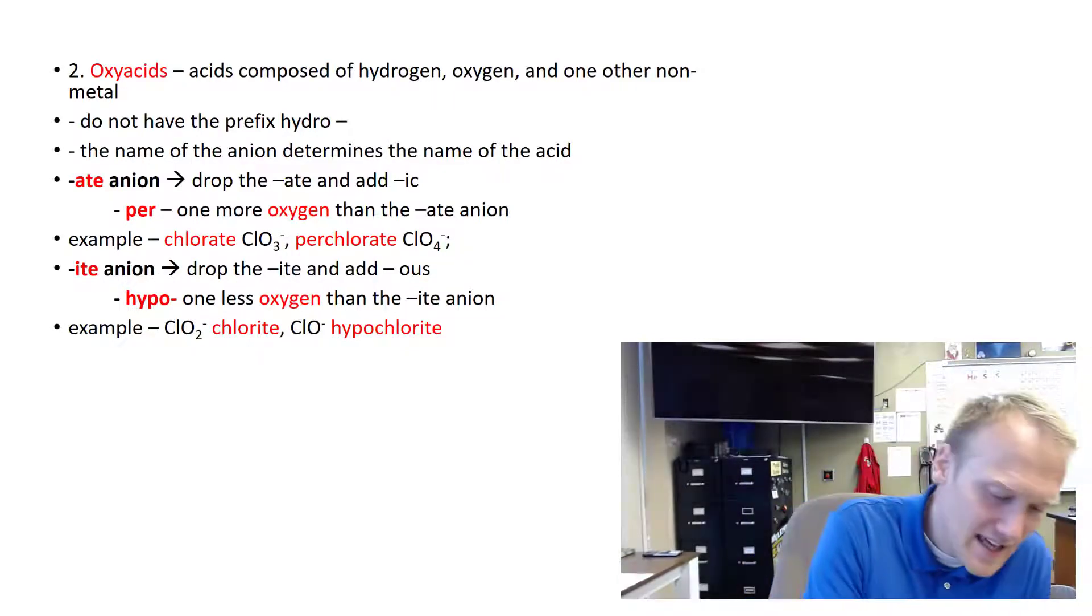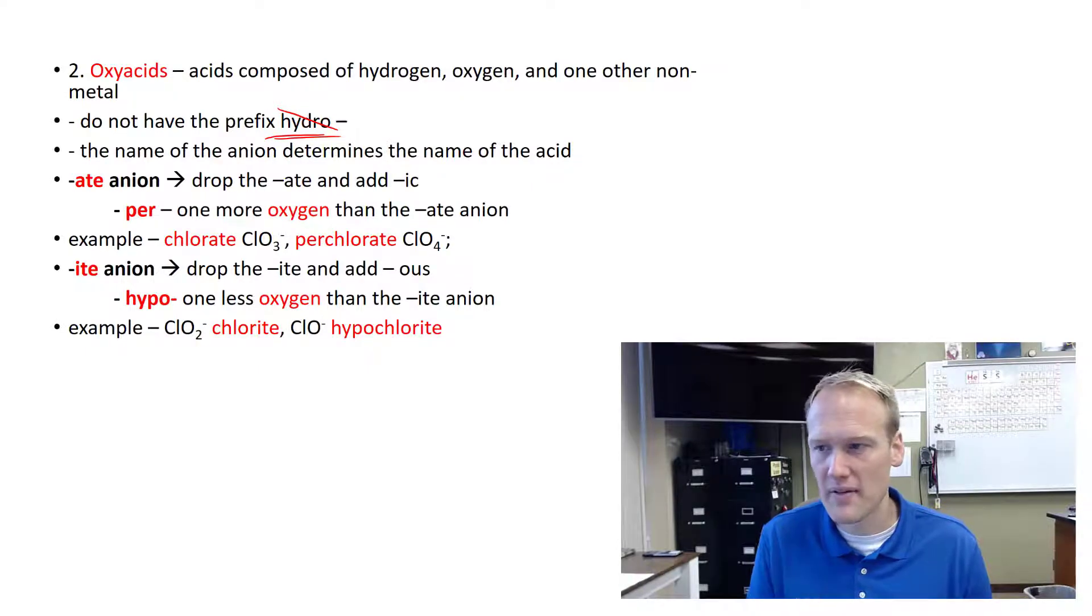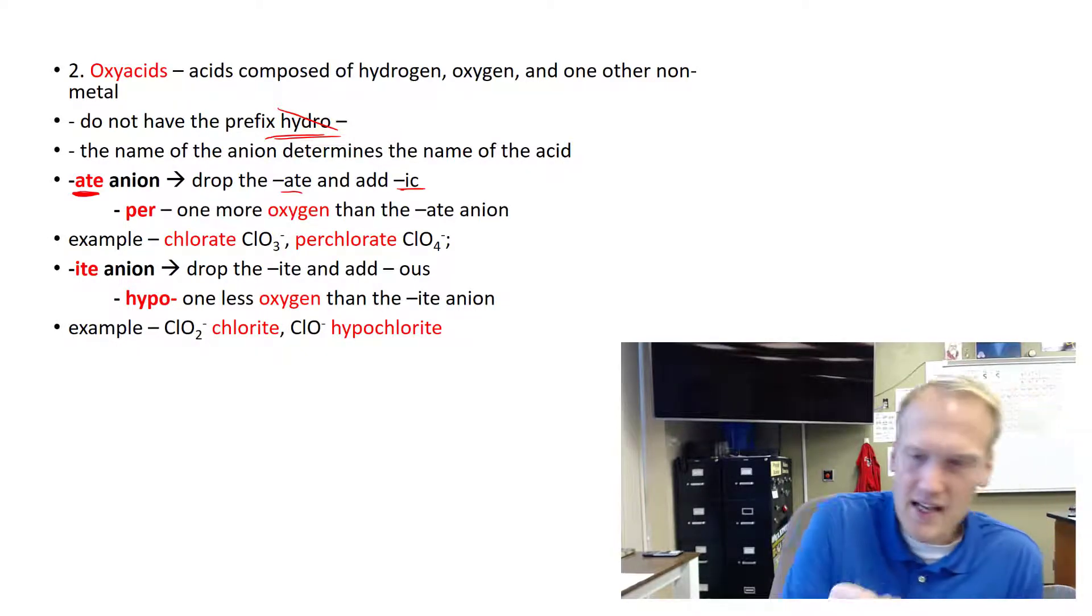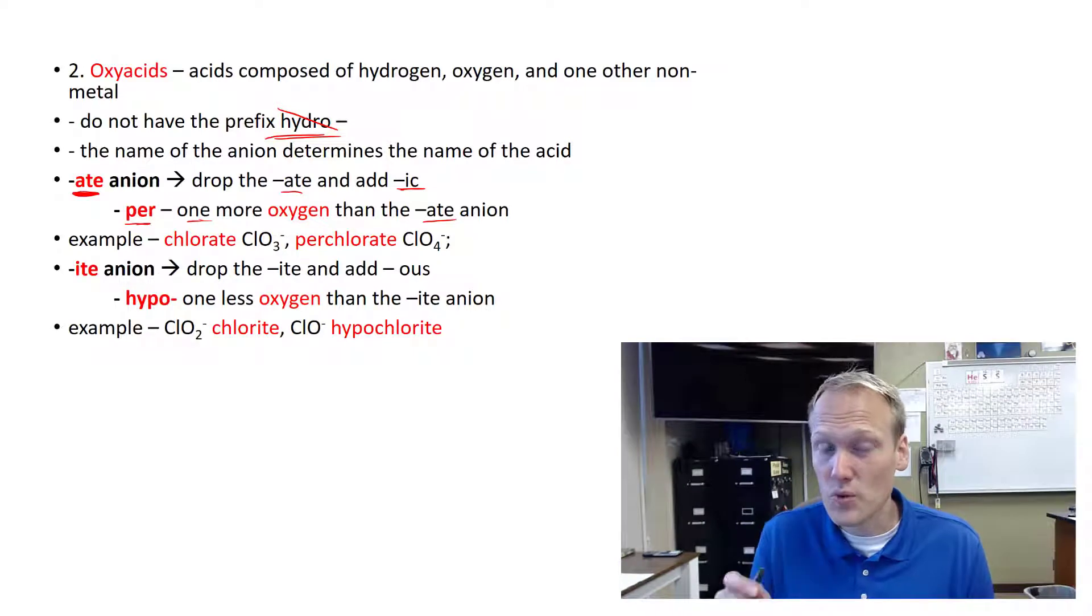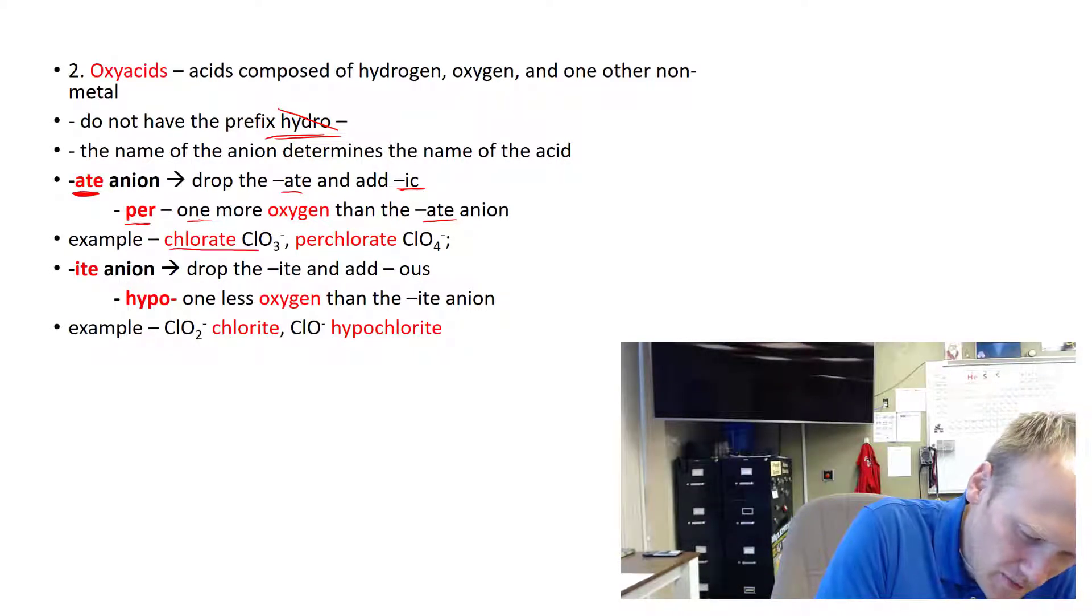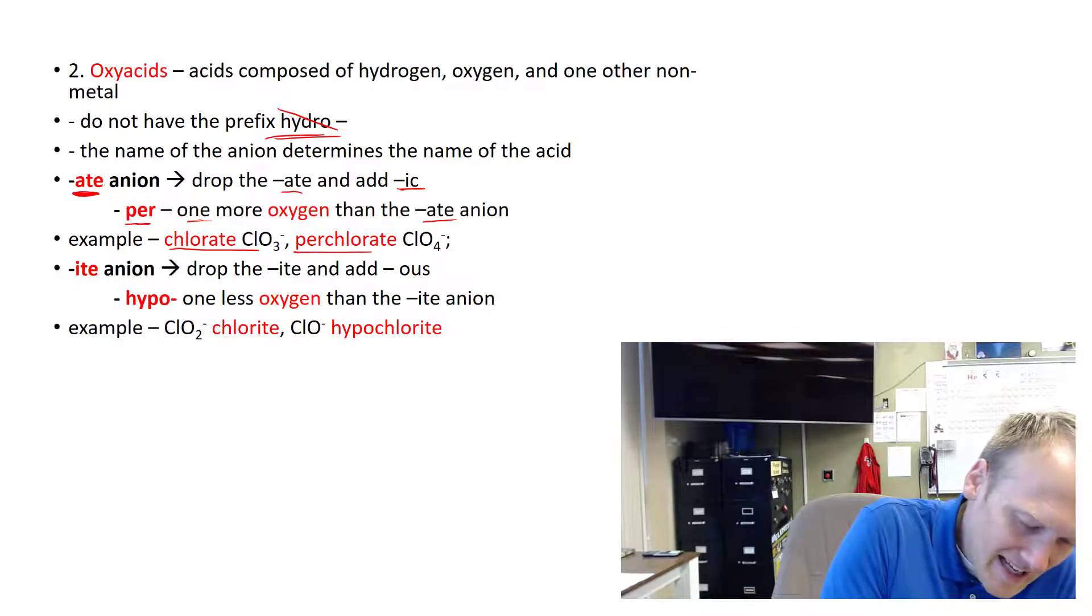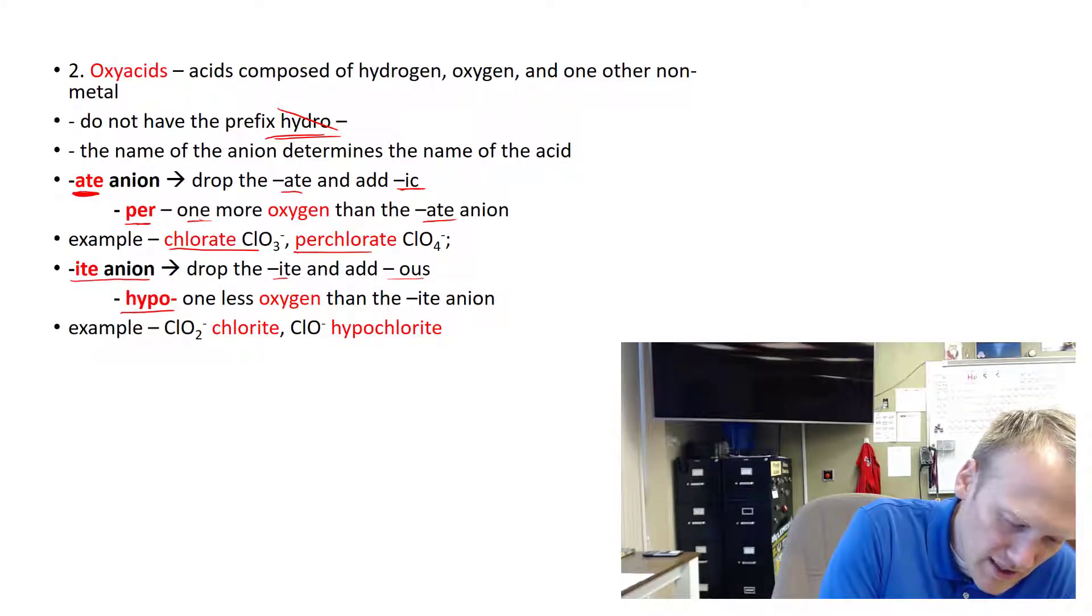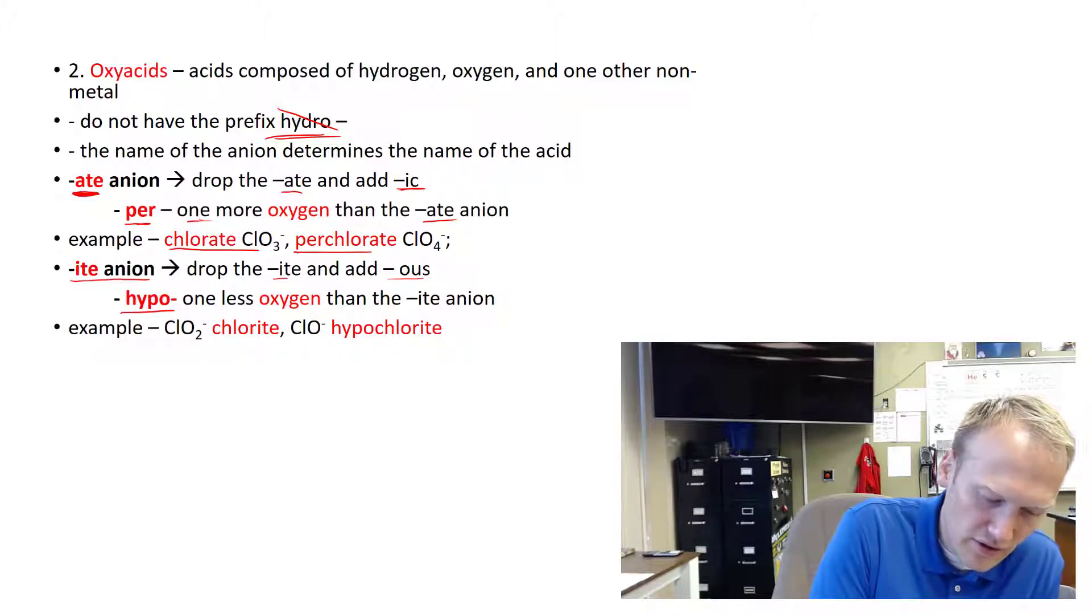First of all, oxy acids never have the prefix hydro. That's a binary acid. Sometimes kids get confused about that. The rule is pretty much this: if the anion ends in -ate, we're going to drop the -ate and make it -ic. Remember that per has one more atom of oxygen than the -ate anion. We've got chlorate, which is ClO3^-1. Perchlorate would be ClO4 with a -1 charge. An -ite anion, we're going to drop the -ite and we're going to put -ous. Remember that hypo is one less oxygen than the -ite anion. So chlorite would be ClO2^- and hypochlorite would be ClO with a -1 charge.